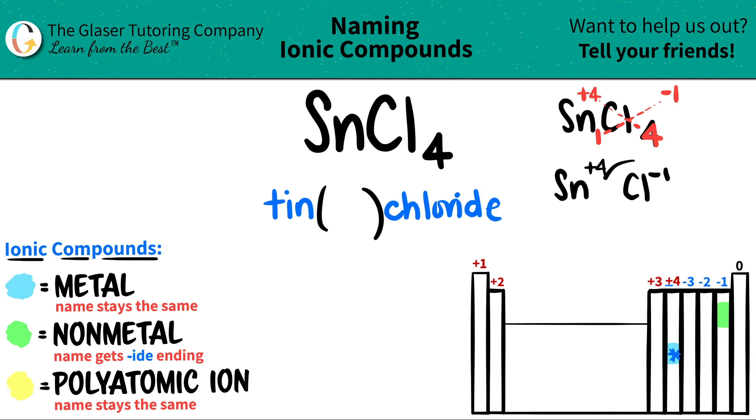Now, since chlorine has a negative one charge and it's in the negative one group, this checks out. So if this checks out, the tin charge has to check out. And since this was a plus four, the Roman numeral inside has to be a four,